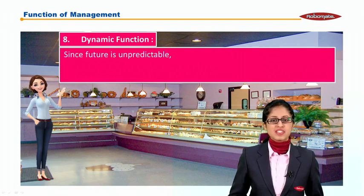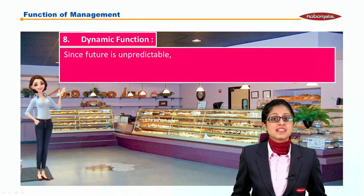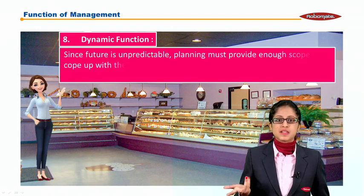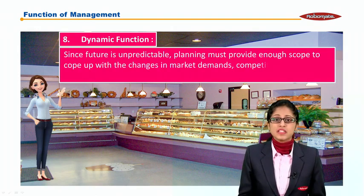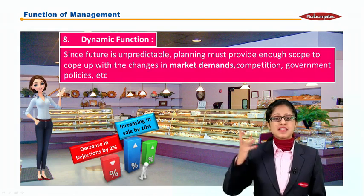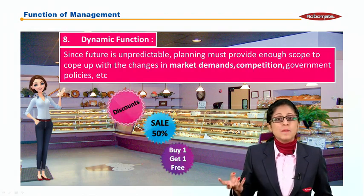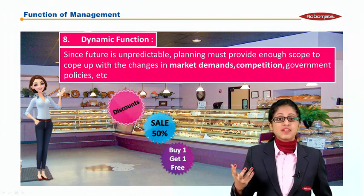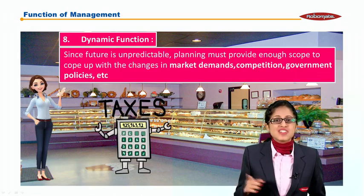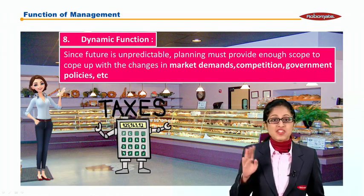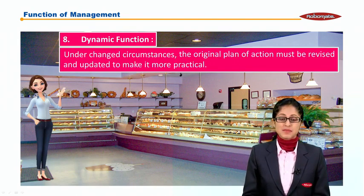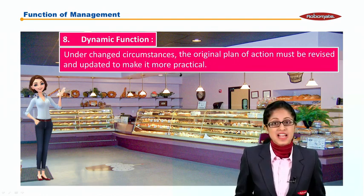The eighth point says planning is a dynamic function — it has a changing nature. Since the future is unpredictable, planning must provide enough scope to cope with changes in market demand, competition, government policy, etc. Market demand can increase or decrease anytime. Competitors may offer discounts, sales, or buy-one-get-one policies. Government policies such as tax changes may occur. Based on these changes, planning must also change. Under changed circumstances, the original plan of action must be revised and updated to make it more practical. If plan A doesn't work, plan B must be ready.